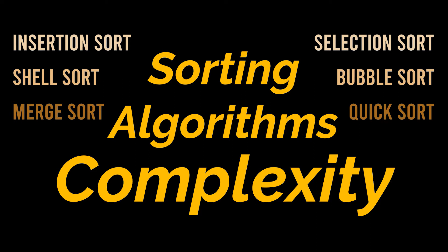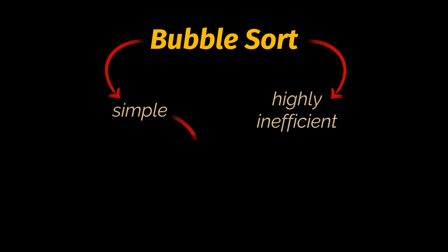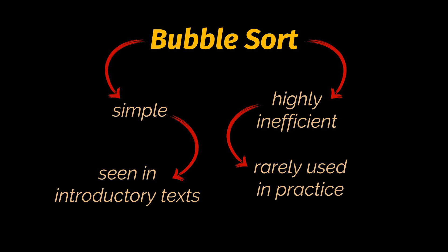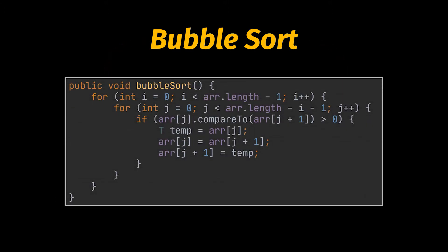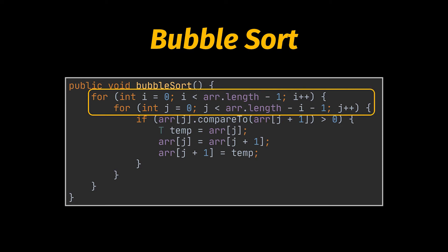Our list of sorting algorithms starts with bubble sort — a simple yet highly inefficient algorithm. Bubble sort is frequently seen in introductory texts due to its ease of analysis, but it's rarely used in practice. Looking at the code, each element inside the array is being traversed twice, which leads to a worst case complexity — Big O — of O(n²), and that is pretty bad compared to the other algorithms we are going to see.